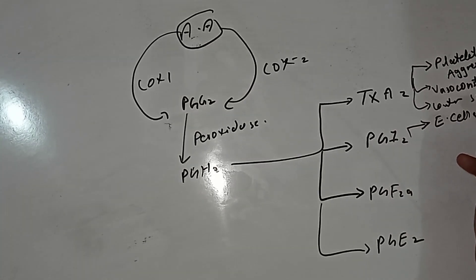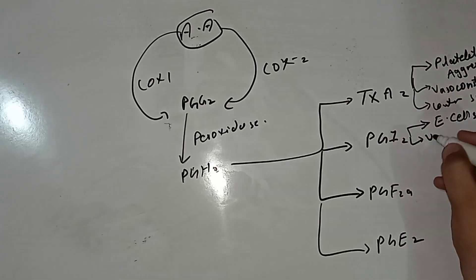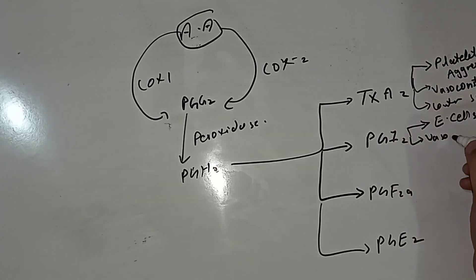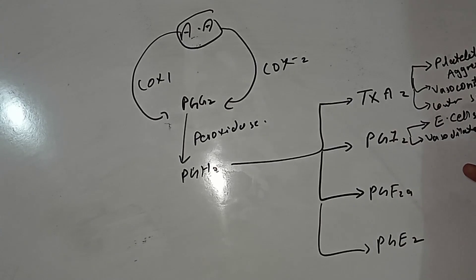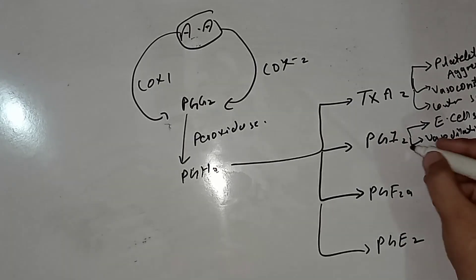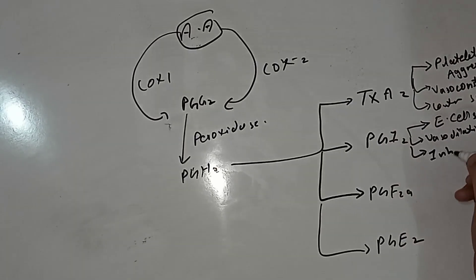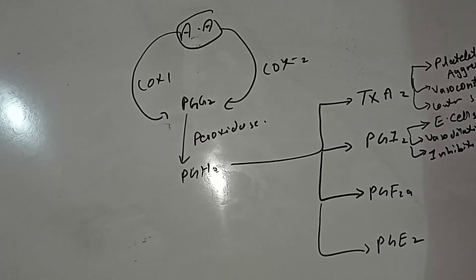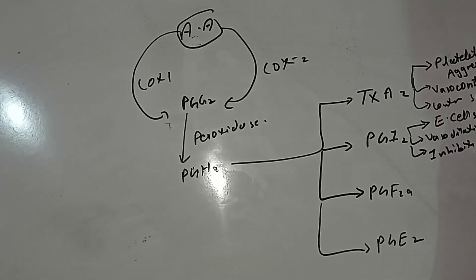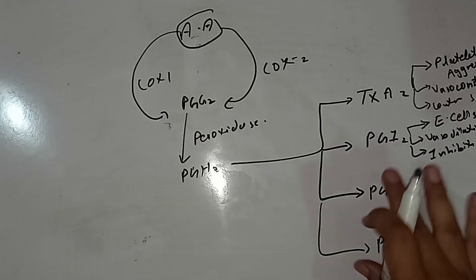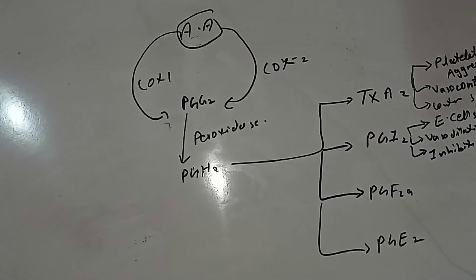Prostaglandin I2, or prostacyclin, is produced in the endothelial cells that form the blood vessels. It promotes vasodilation and inhibits platelet aggregation. So its role is opposite to that of thromboxane A2.